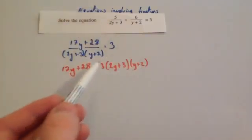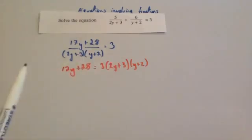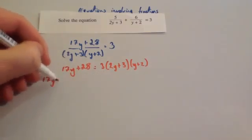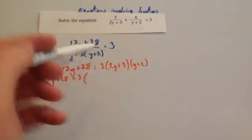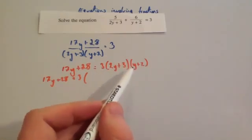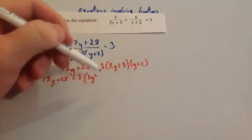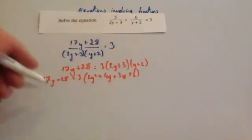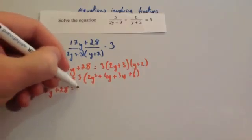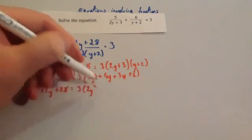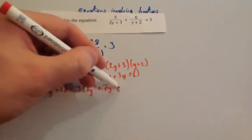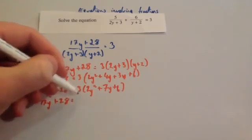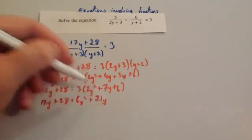We're going to expand the brackets using FOIL, then times by 3, bring everything to one side, and factorise and solve the quadratic. Expanding: 2y times y is 2y squared, 2y times 2 is plus 4y, 3 times y is plus 3y, and 3 times 2 is 6. So we get 17y plus 28 equals 3 bracket (2y squared plus 7y plus 6). Timesing by 3: 17y plus 28 equals 6y squared plus 21y plus 18.